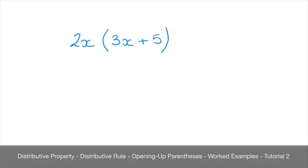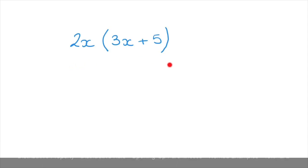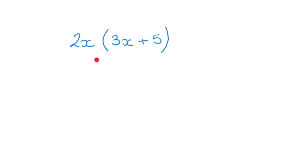In this second tutorial on the distributive rule, we look into some slightly more complicated examples. The first one we work through is shown here: we have 2x times, in parentheses, 3x plus 5.